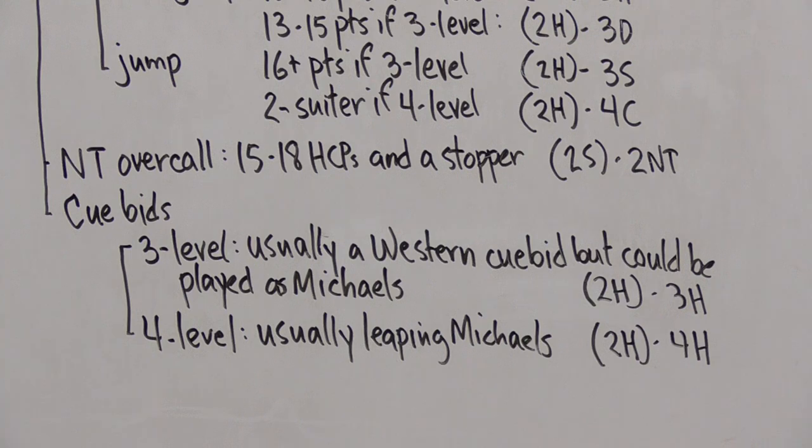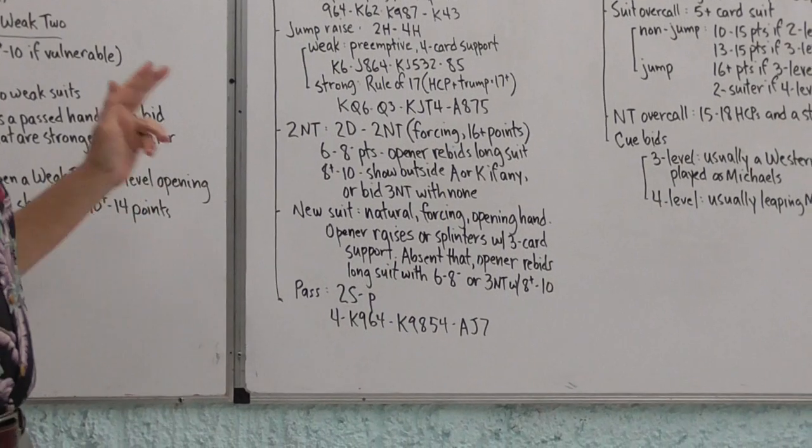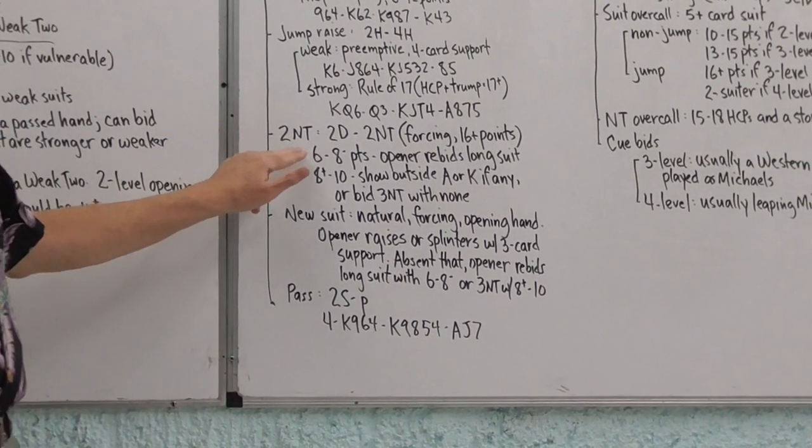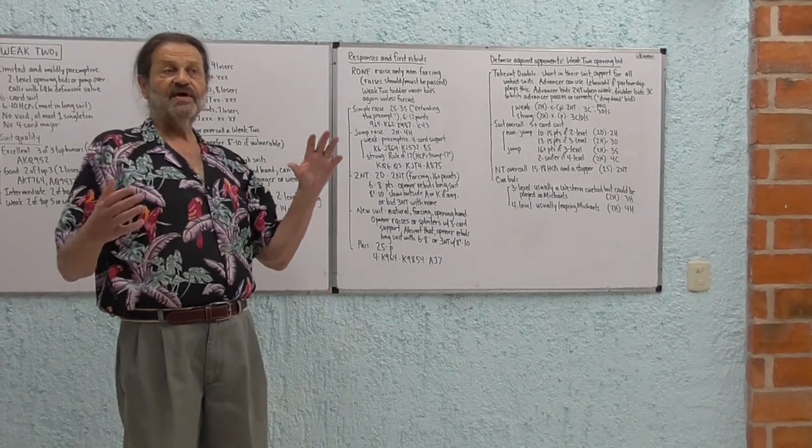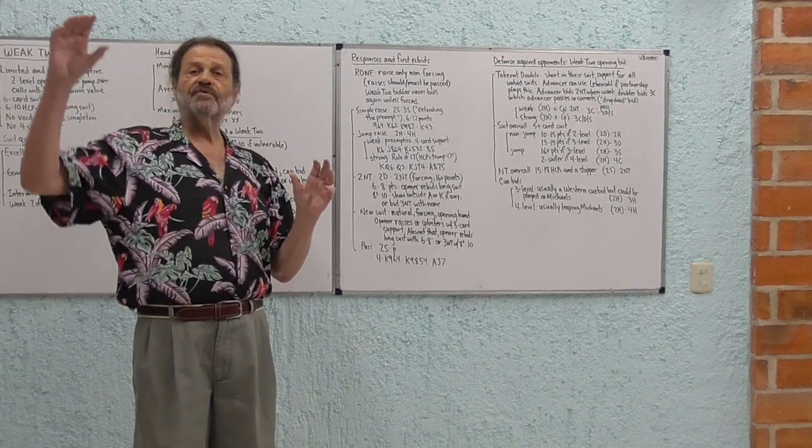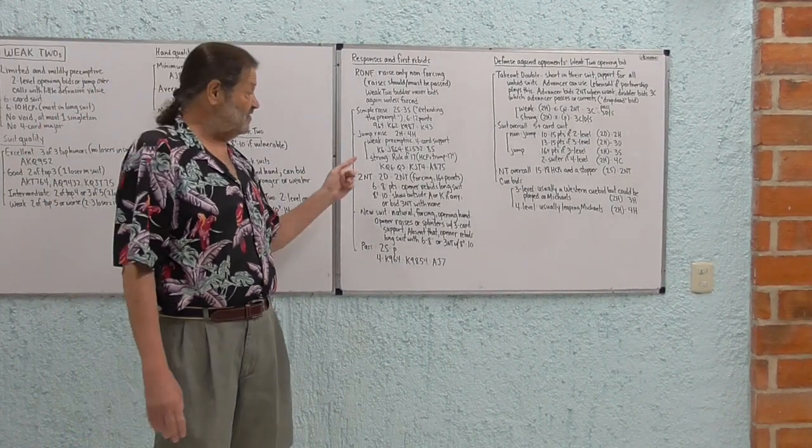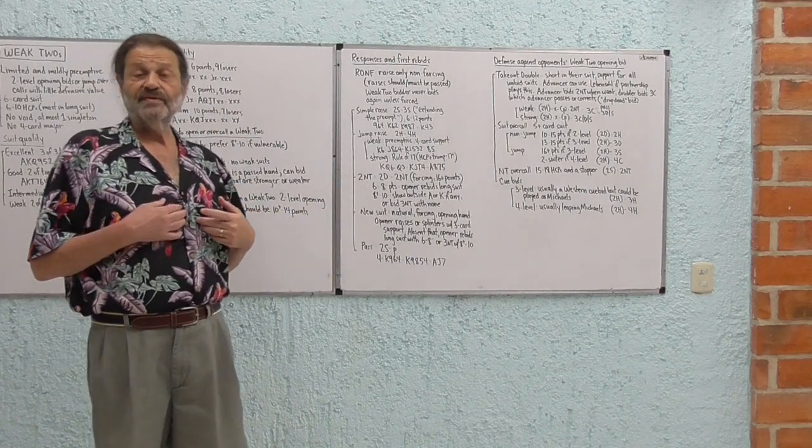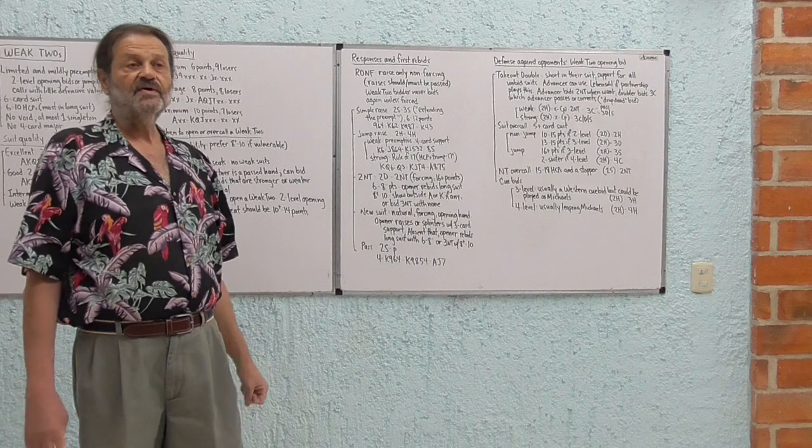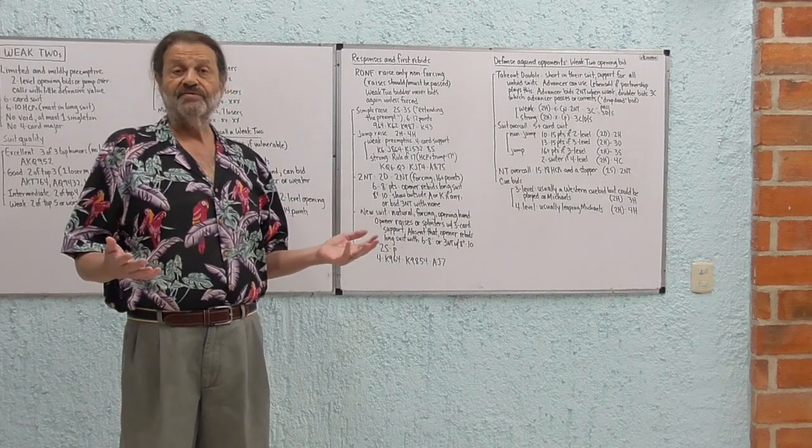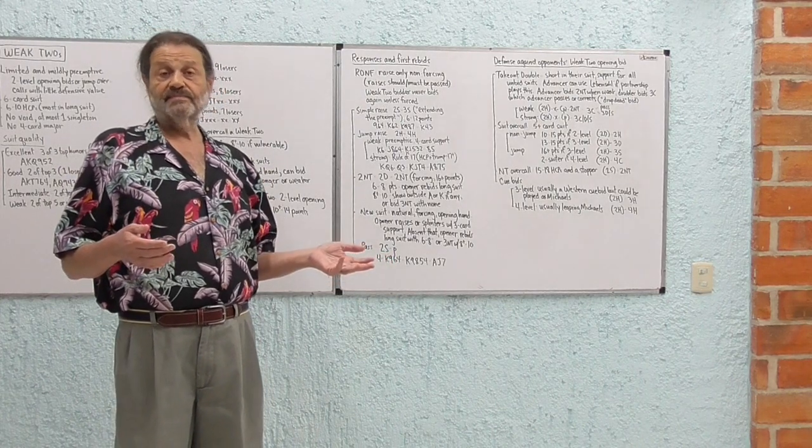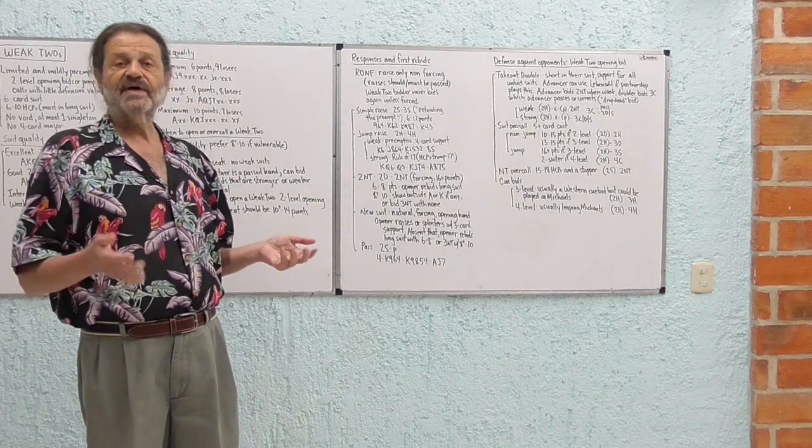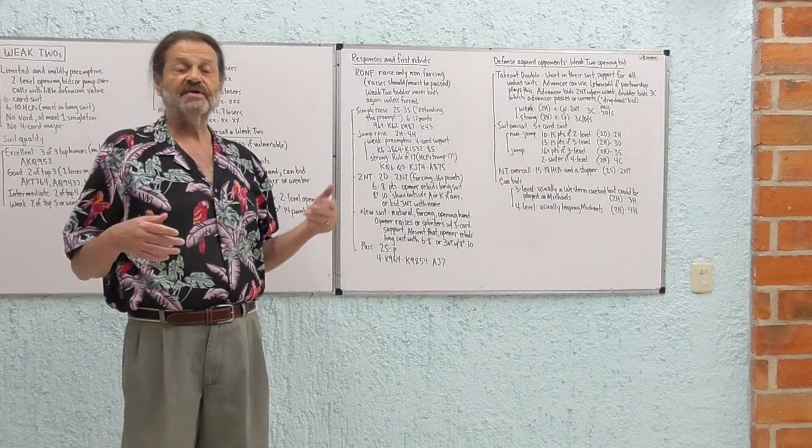One more thing I want to say coming back to this two no trump bid. There are two other ways for opener to understand two no trump. One is called Ogust. Ogust is a little bit like Blackwood in the sense that Blackwood has a series of steps above the four no trump bid that show progressively better hands. That's also true with Ogust. When you make a weak two opening bid and partner bids two no trump, if you're playing Ogust, three clubs says I have a weak hand and a weak suit. Three diamonds says I have a weak hand and a better suit. Three hearts would say I have a good hand with a bad suit. And a good hand here means the maximum, good eight plus, etc. That's one way to play this.